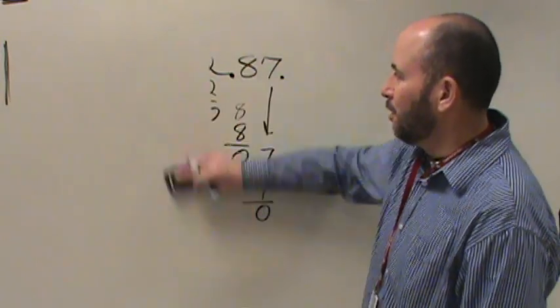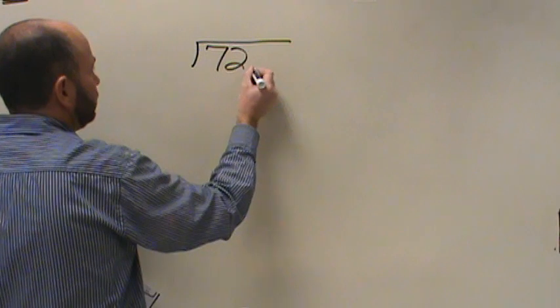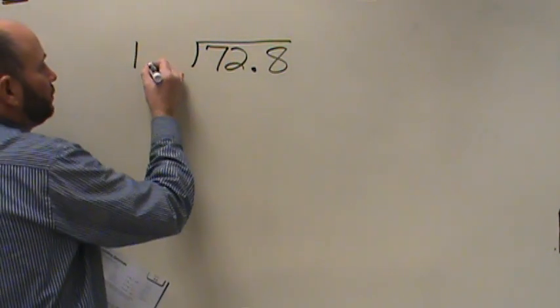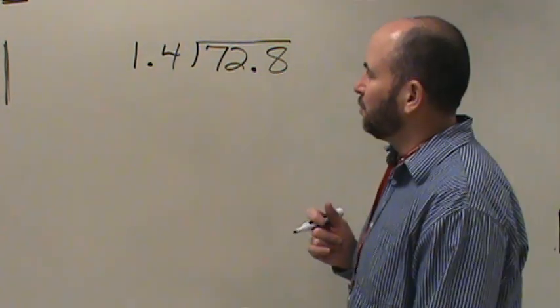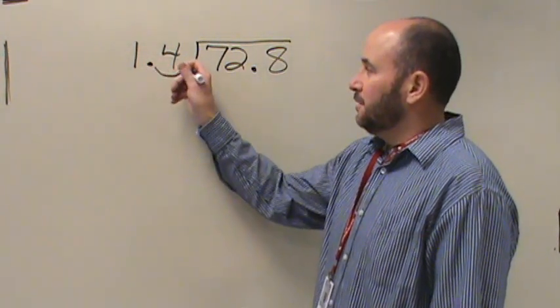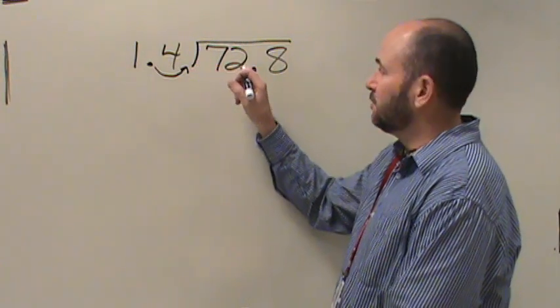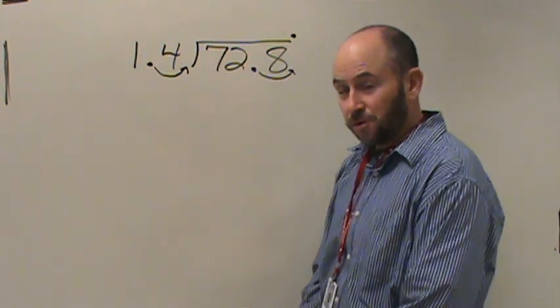Let's erase our problem and try another one. Let's try 72 and 8 tenths divided by 1 and 4 tenths. Give that problem a try. Now we have this one ready to go. Start by moving your decimal point in your divisor to make a whole number, which gives you 14. If you move it in your divisor, you then move it in your dividend. Take it straight up, and now you're ready to divide as if it were a normal division problem with whole numbers.